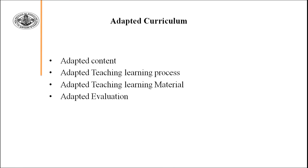The next component under adapted curriculum is adapted evaluation. Evaluation is one of the most important parts of the curriculum — through it we know how much the child has learned. If we evaluate in a conventional way, it will be difficult for children with special needs. So we will modify or adapt our evaluation system according to their special needs — giving extra time, subjective or objective questions, or questions that are convenient and easy for them to solve.